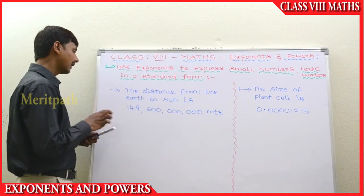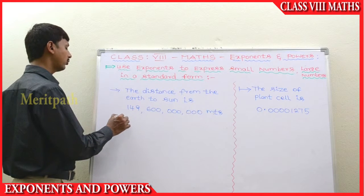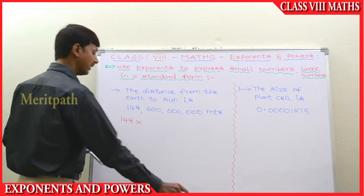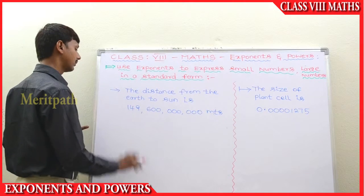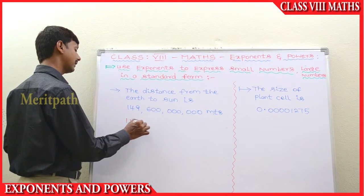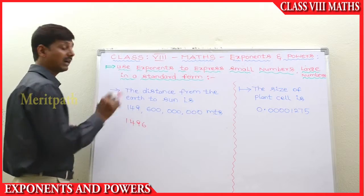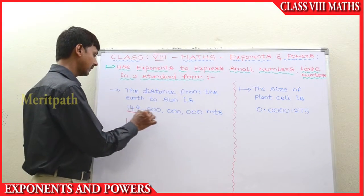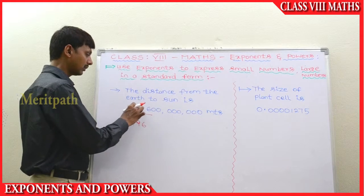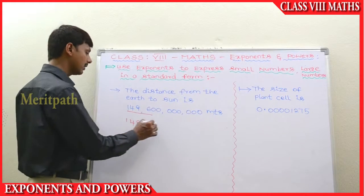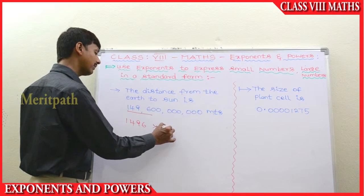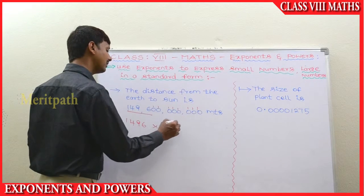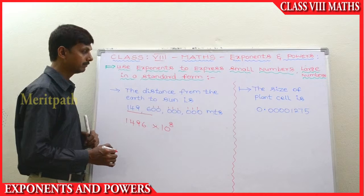Let's try this. We write 1496, and then count the zeros: 10 to the power 1, 2, 3, 4, 5, 6, 7, 8. So that gives us 10 to the power of 8 meters.